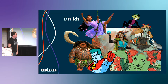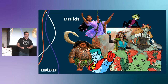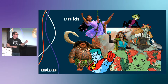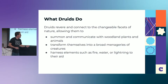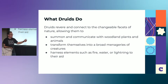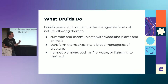Next, druids. Druids are the natural magicians of an adventuring party — defenders of the natural order, friends to plants and animals. They can turn into plants and animals and harness the elements. They have something called wild shape, which lets them turn into a panther and gain all the speed of a panther, or turn into an eagle and get a bird's-eye view of everything. They can also cast spells like wall of fire, call lightning, and tsunami — they're incredibly powerful.